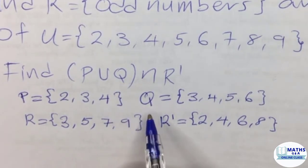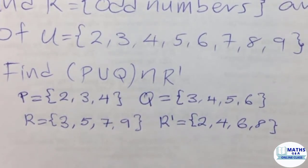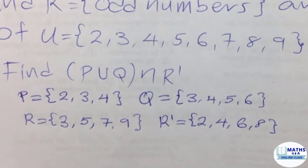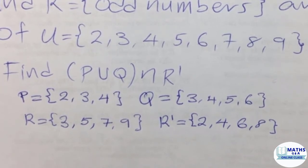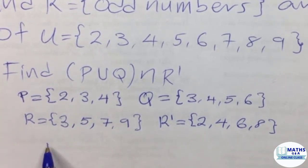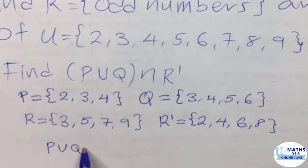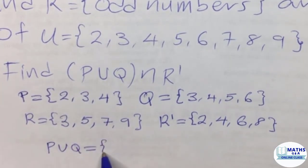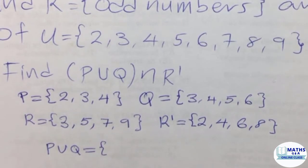We know that if we have brackets with respect to any mathematical question, we have to tackle what is in the brackets first. So let's go ahead and find P union Q. Union means that we're putting all the elements in the set P and then the set Q together.